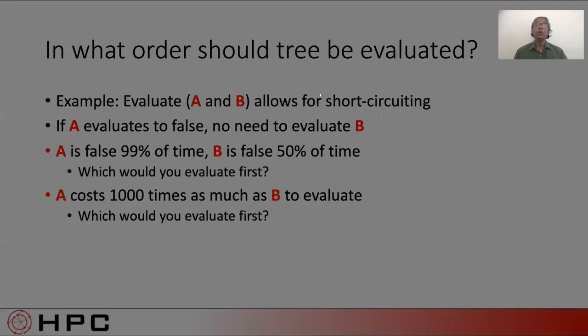But what if I told you that A is false 99 times out of 100, whereas B is false only 50 times out of 100? You might be tempted to pick A first. But what if I also told you that A costs 1,000 times as much as B? A could be a complex regex evaluation. B could be a simple integer equality comparison. Would you still pick A first?